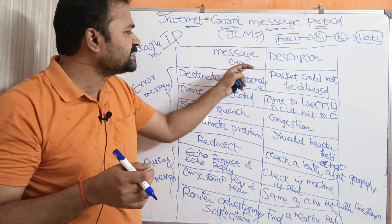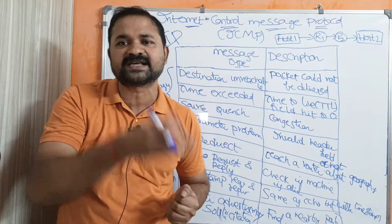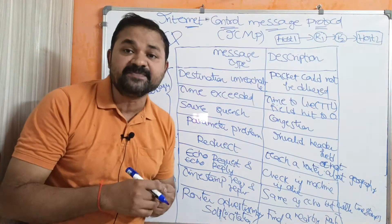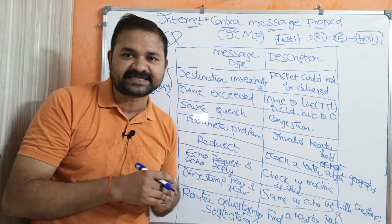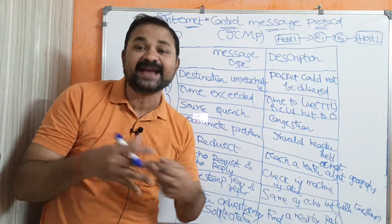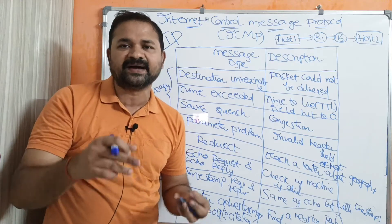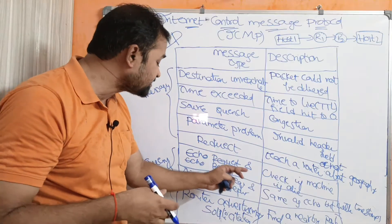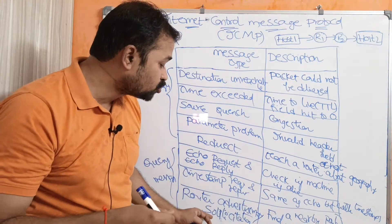Looking at the message type table, the first column represents the message type and the second column represents the description. We have two types of messages: error messages and query messages. There are 5 error messages: destination unreachable, time exceeded, source quench, parameter problem, and redirect or redirection. The remaining three are query messages used to provide statistics about the network: echo request and echo reply, timestamp request and reply, and router advertisement, also called router solicitation.